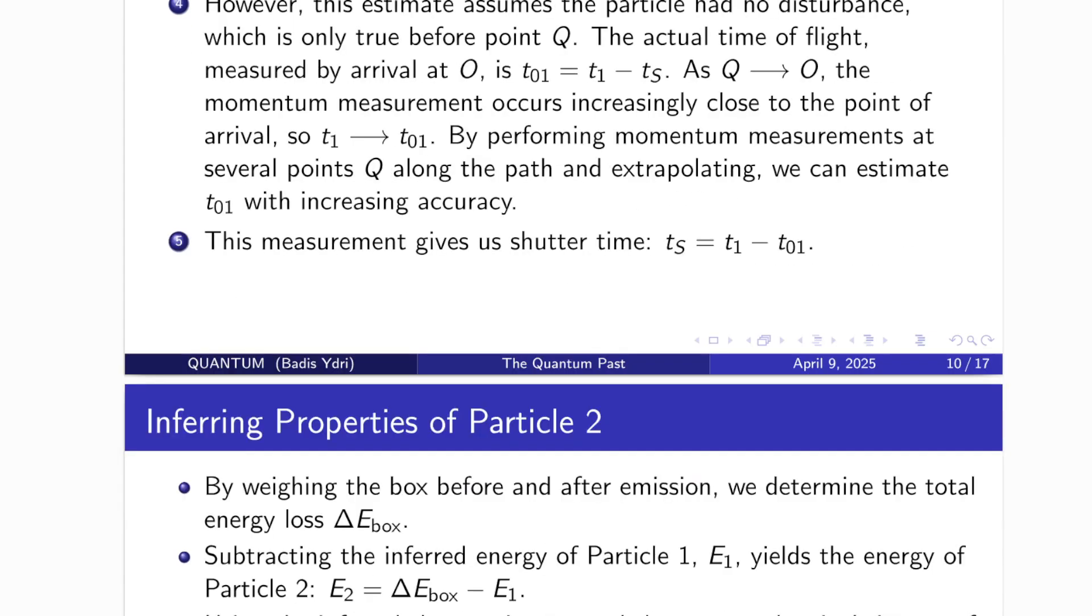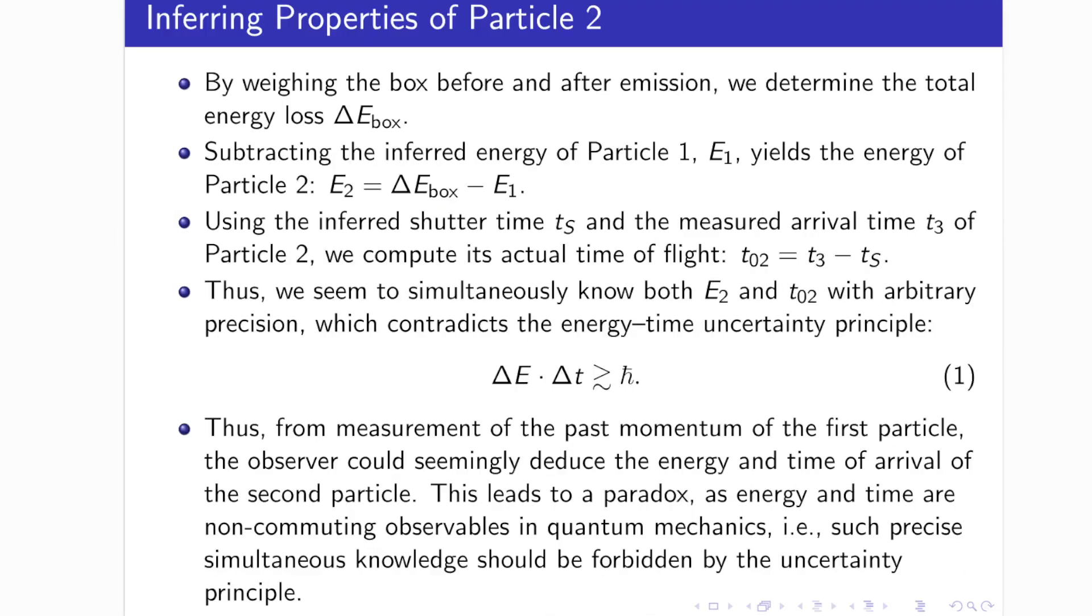Part 4, Inferring the Properties of the Second Particle. Now we turn to the second particle. From weighing the box, the observer already knows the total energy lost. By subtracting the energy of the first particle, they calculate the energy of the second. Next, using the inferred shutter time and the measured arrival time of the second particle, they compute how long that particle was in flight. At this point, they now possess both the energy and the time of flight of the second particle. This is where the paradox strikes. In quantum mechanics, energy and time are non-commuting observables. You cannot, in principle, know both with arbitrary precision. And yet, this setup seems to allow exactly that. It seems to allow us to reconstruct the past with classical certainty. But quantum mechanics tells us that's not possible.